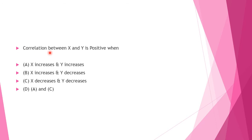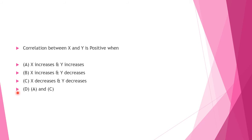Next question: Correlation between X and Y is positive when — Option A: X increases and Y increases — this is true. Option B: X increases and Y decreases — this is false. Option C: X decreases and Y decreases — this is true. Option D: Option A and C. Answer is Option D: both Option A and Option C are correct.